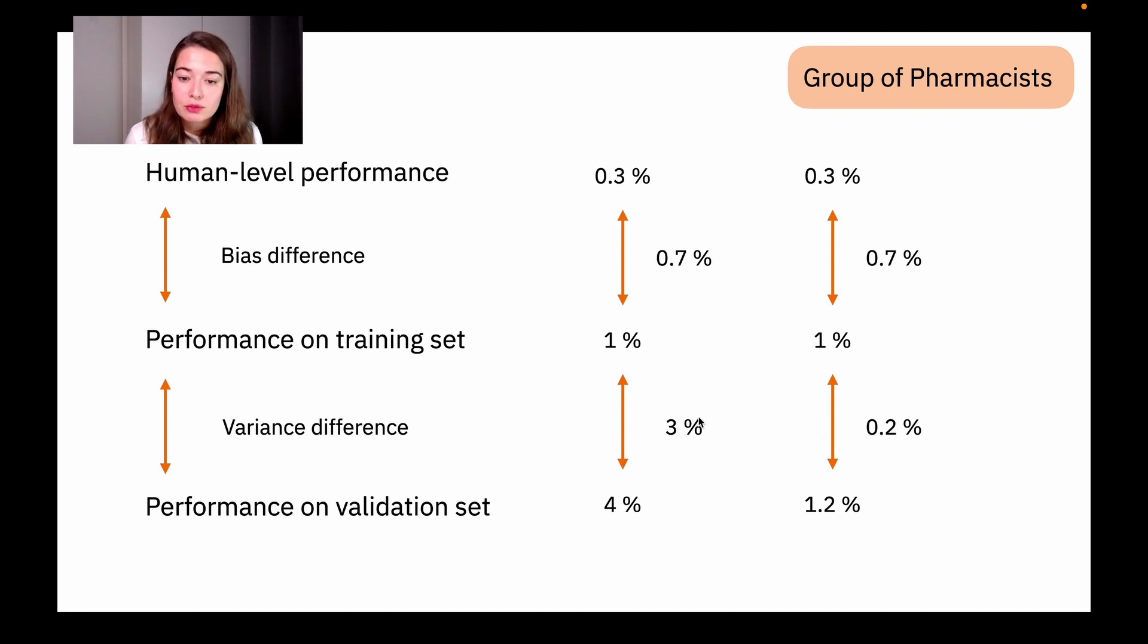So then, actually, instead of the variance difference, now it makes more sense to focus on the bias difference because it's higher than three times the variance difference. So at this point, you will have more gain if you focused on lowering the bias.